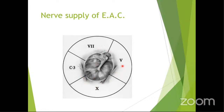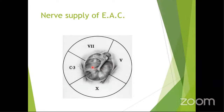The nerve supply of the external auditory canal: anterosuperiorly by V3 (auriculotemporal nerve), anteroinferiorly by Arnold's nerve (vagus), posteroinferiorly by C3, and posterosuperiorly by the facial nerve. For the tympanic membrane: the anterior part is supplied by the auriculotemporal nerve, the posterior part by Arnold's nerve and facial nerve. The facial nerve does not supply the lateral surface of the tympanic membrane. The medial surface of the tympanic membrane is supplied by Jacobson's nerve, which is the tympanic branch of the glossopharyngeal nerve.